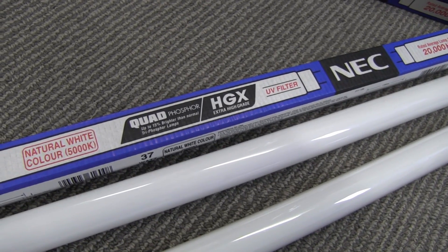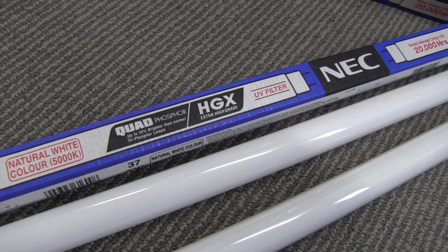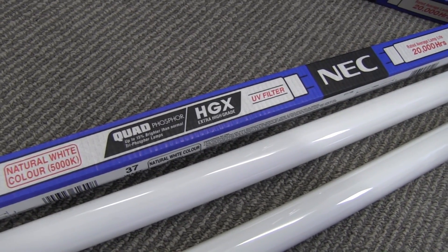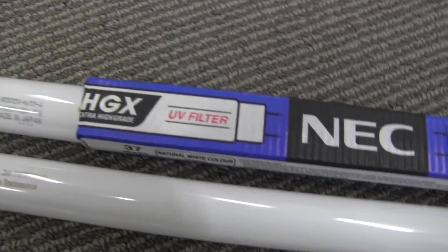And I believe these NEC ones don't contain any mercury. There's no marking on them at all as such. And there's similar marking on the cheaper ones, warning, contains mercury. And there's no HG symbol on the tube or anything like that.